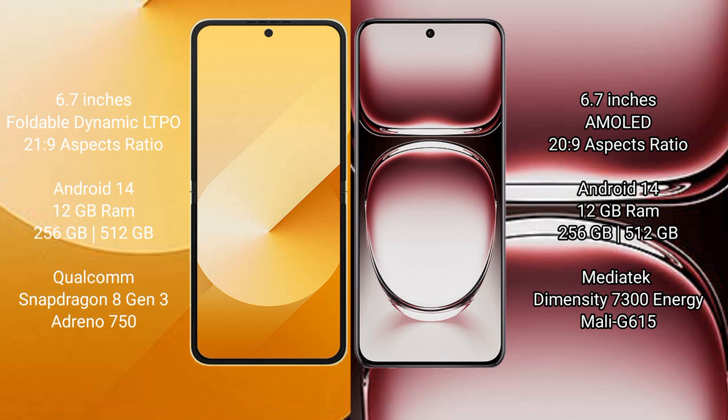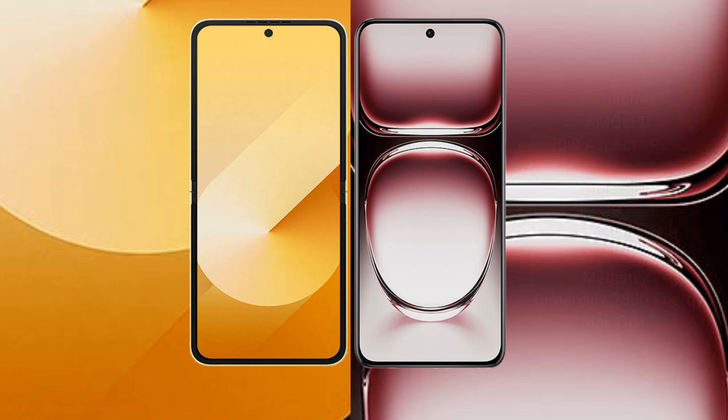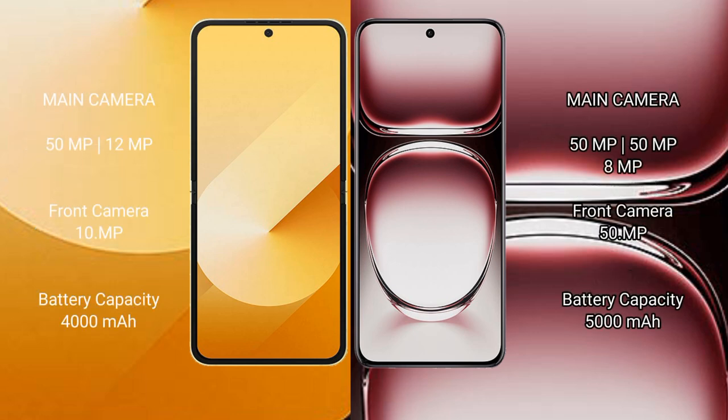The Samsung Galaxy Z Flip 6 comes with 12GB RAM and 256GB or 512GB internal storage, featuring the Qualcomm Snapdragon 8 Gen 3 processor and Adreno 750 GPU. The Oppo Reno 12 Pro comes with 12GB RAM and 256GB or 512GB internal storage, with a MediaTek Dimensity 7030 processor and Mali-G615 GPU.